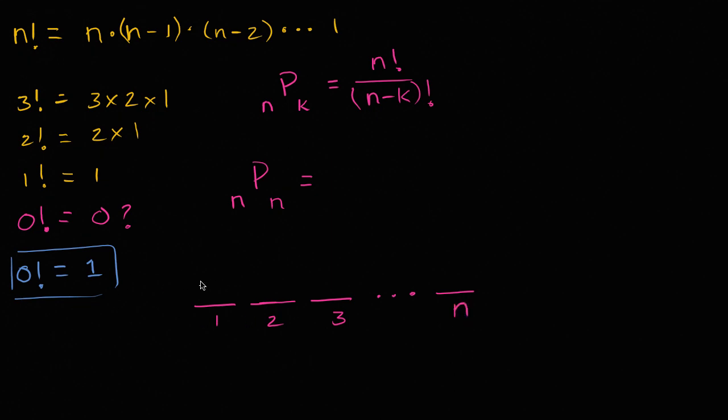Well, there would be n possibilities for which object is in the first position. And then for each of those possibilities, there would be n minus one possibilities for which object you choose to put in the second position because you've already put one into that position.